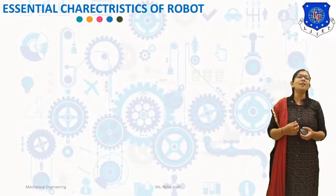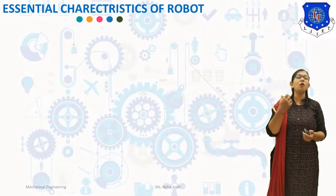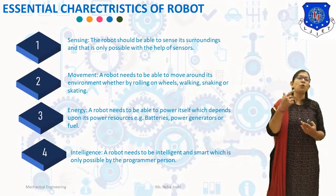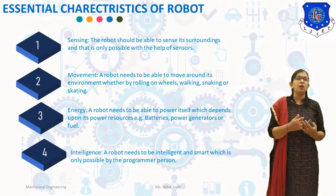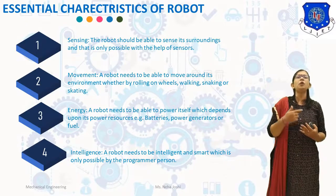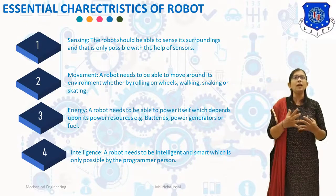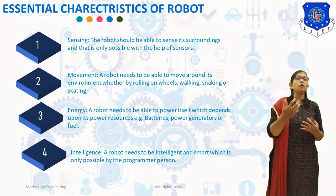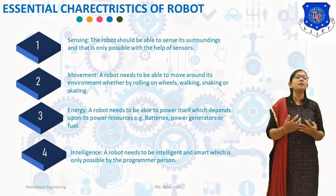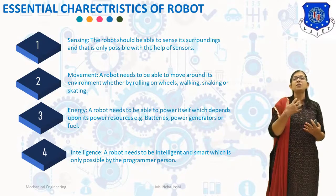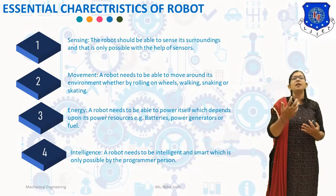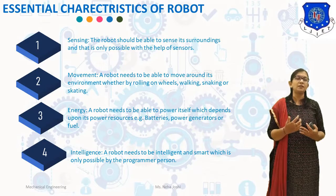We will discuss what are the essential characteristics of robots. The first essential characteristic of a robot is sensing. The robot should be able to sense its surroundings, and that is only possible with the help of sensors. Different kinds of sensors are used like touch sensors, which are used as hands, light sensors, hearing sensors, or chemical sensors.